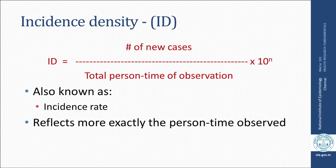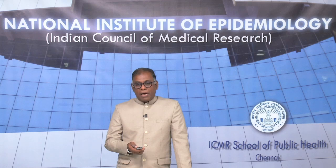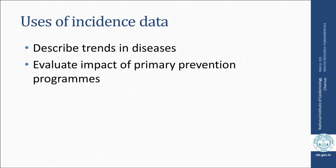Incidence density (ID) is the number of new cases divided by the total person-time of observation, multiplied by a factor of 10. This is also known as incidence rate. It more exactly reflects the person-time observed. Incidence data describes trends in diseases over a period of time — how a particular disease changes — and it evaluates the impact of primary prevention programs.